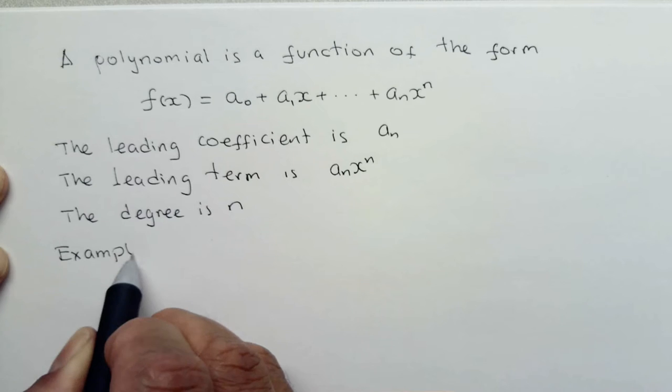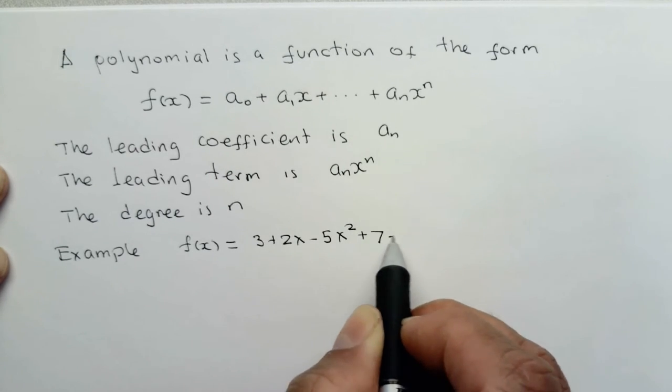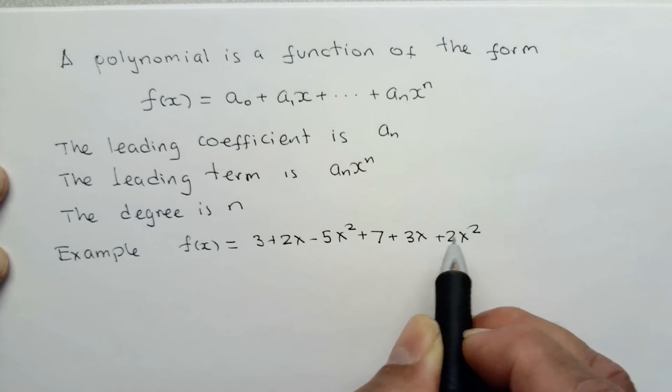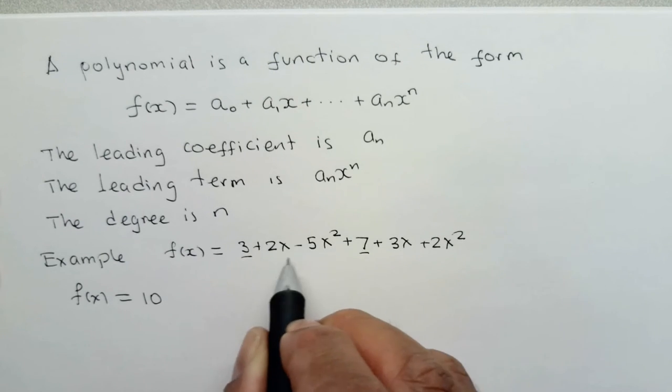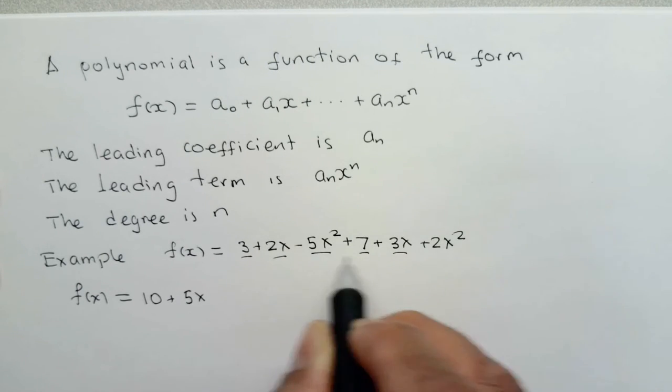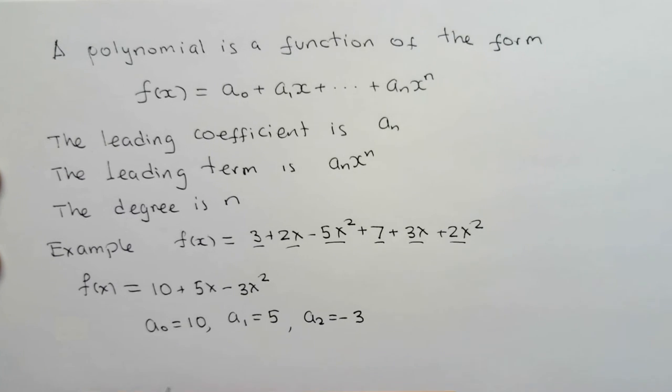This is an example. We can rewrite this polynomial as... And therefore, a sub 0 is 10, a sub 1 is 5, and a sub 2 is negative 3. The leading coefficient is negative 3. The leading term is negative 3x squared, and the degree of the polynomial is 2.